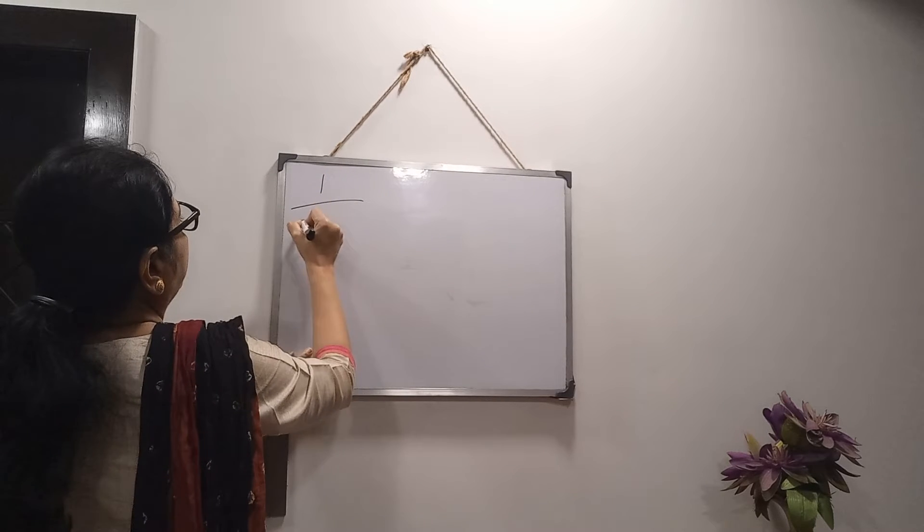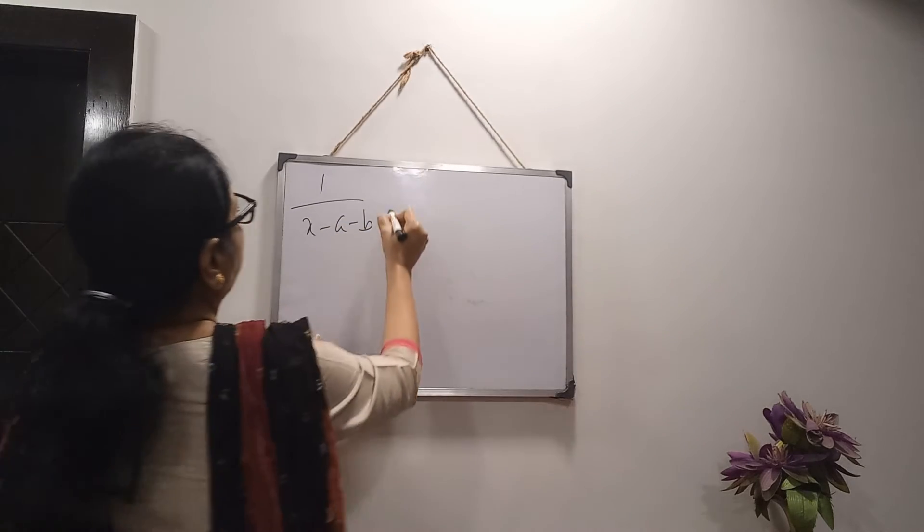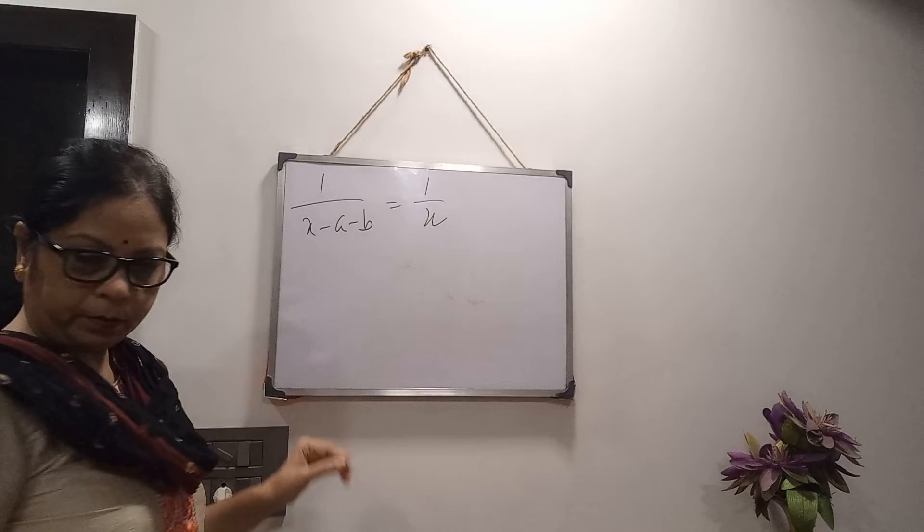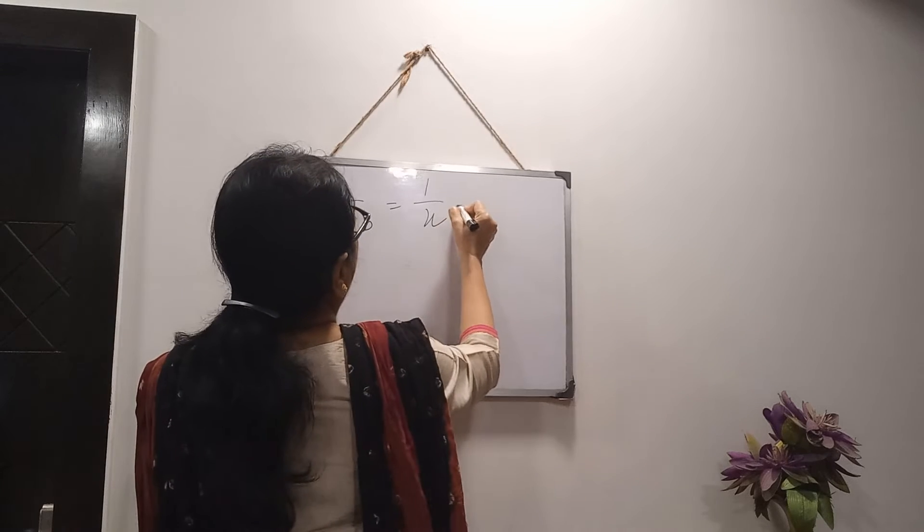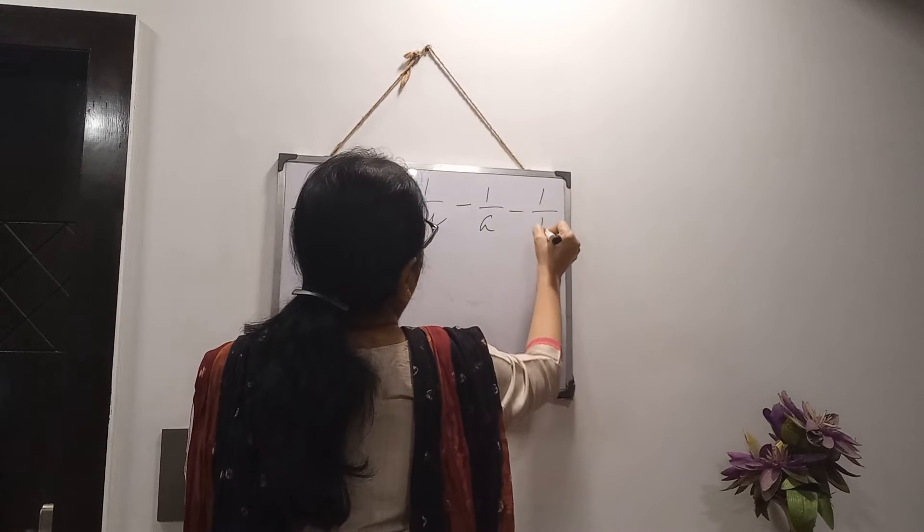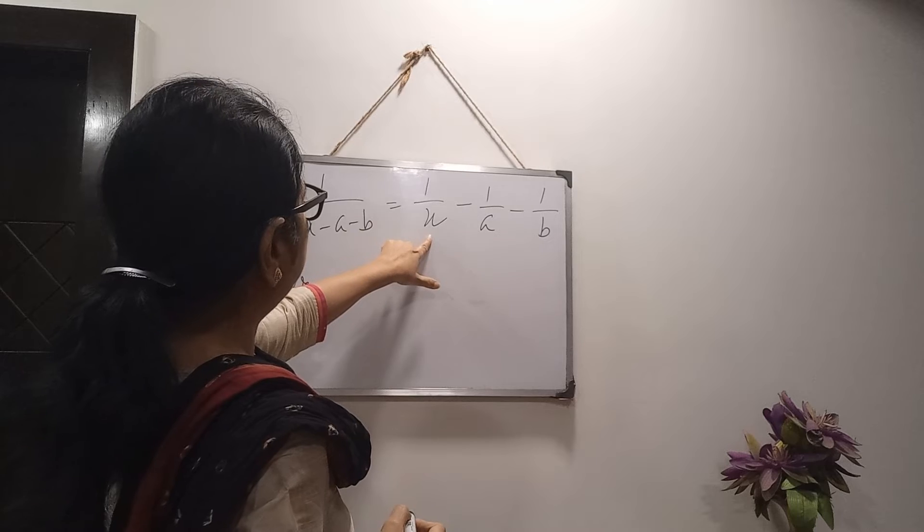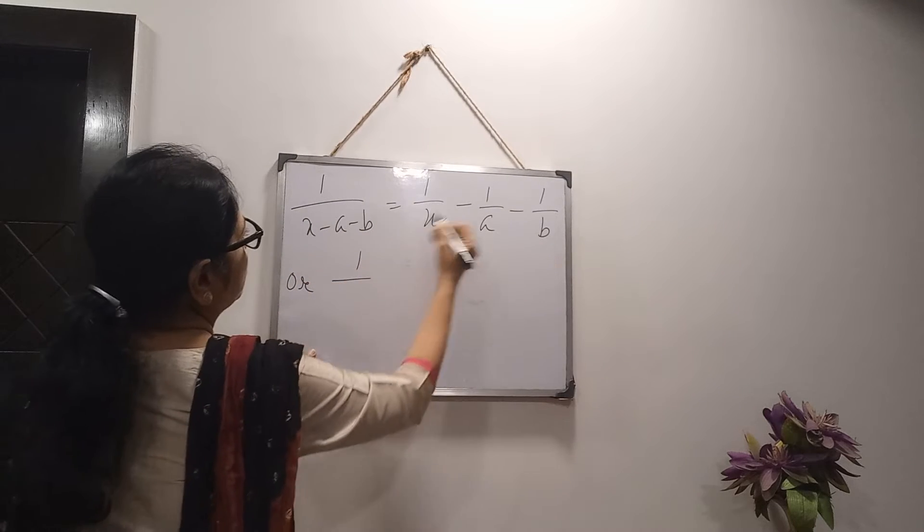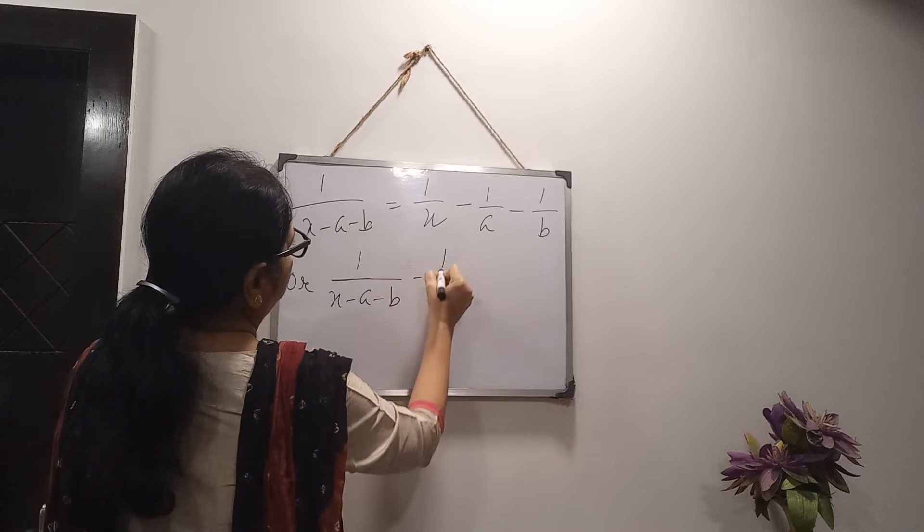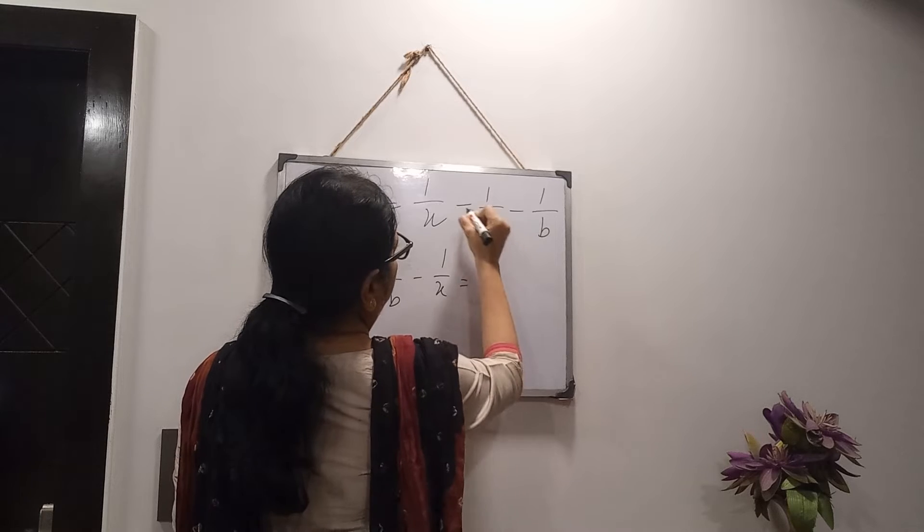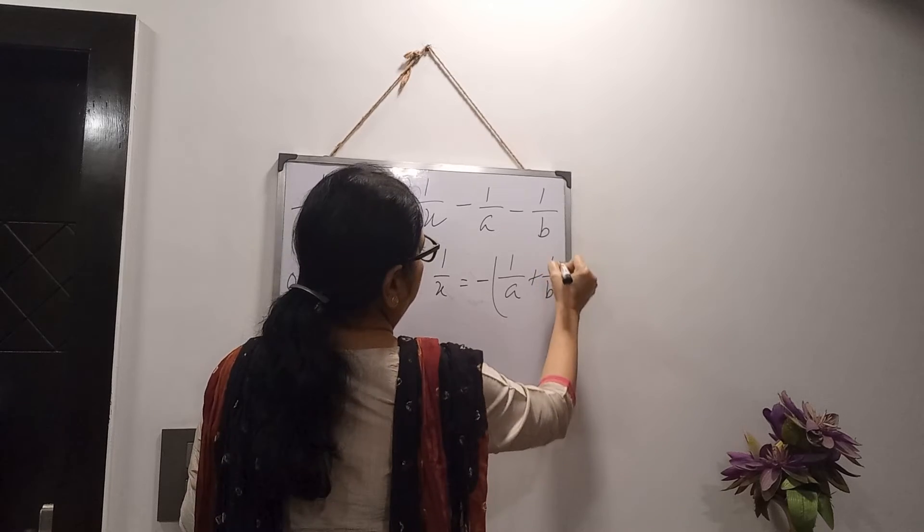If the sum is this type. 1 by x minus a minus b equals to 1 by x minus 1 by a minus 1 by b. Now, what I will do? To make it easier, x related term, I will take in left hand side. And constant terms, I will keep in right hand side. So, this is becoming minus 1 by x. And here, both are minus. You can take minus. It is common. Then, 1 by a plus 1 by b.